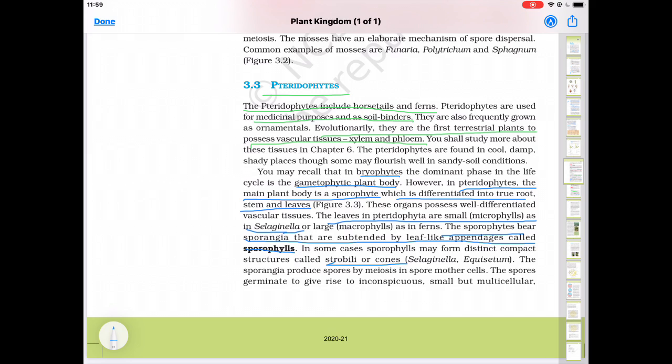The sporangia produces spores by meiosis in spore mother cells inside the sporangia. In the strobilus or on the sporophyll sporangia are present. Inside the sporangia spore mother cells are present. Then meiosis occurs in spore mother cells.